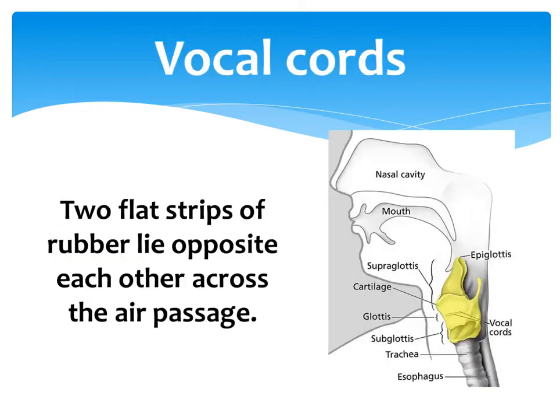The vocal cords are two flap strips of rubber lying opposite to each other. They are situated at the top of the air passage.